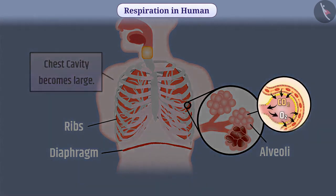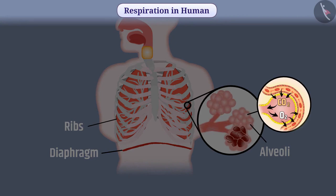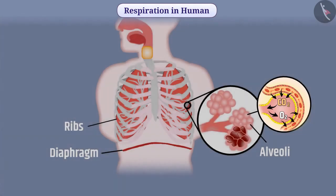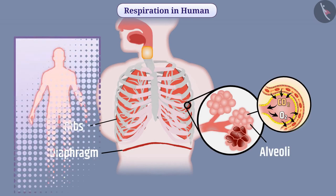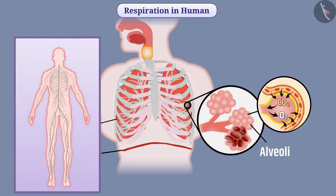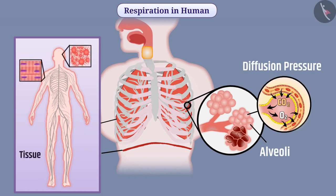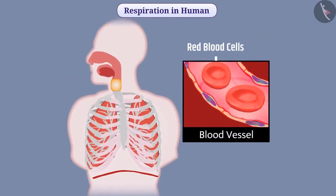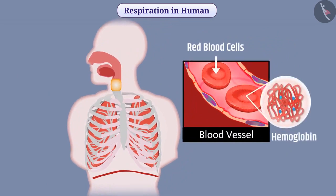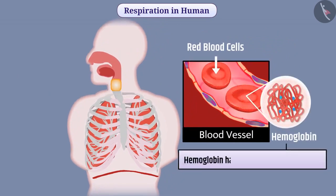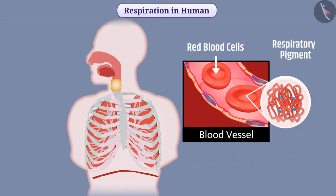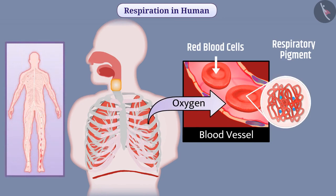Oxygen present in the alveolar air enters the blood of the alveolar blood vessels. Since the human body is large, diffusion pressure is not sufficient to carry oxygen to all tissues. Therefore, red blood cells contain hemoglobin, which has a high affinity for oxygen. The respiratory pigment hemoglobin takes oxygen from the air of the alveoli and carries it to all tissues and each cell of the body.